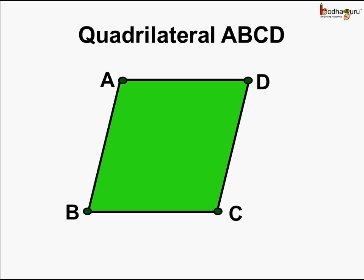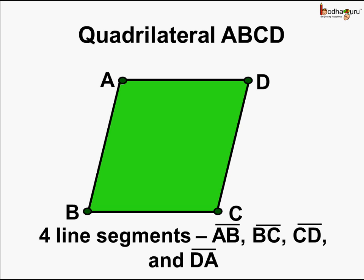What about line segments? The quadrilateral ABCD is made of four line segments, which are line segment AB, line segment BC, line segment CD and line segment DA.